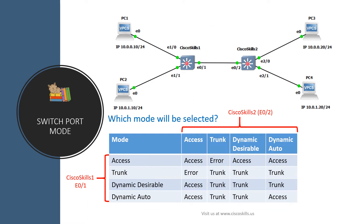This table shows which mode will be selected. For example, if you configure port E01 on Cisco Skills SW1 as trunk mode and port E02 on Cisco Skills SW2 as access mode, you will get an error. In order to form a trunk, you have to configure port E02 on Cisco Skills SW2 as either trunk mode, dynamic desirable mode, or dynamic auto mode.